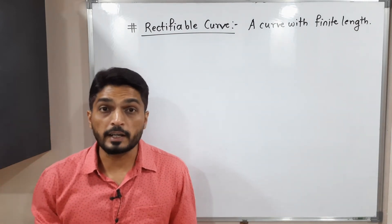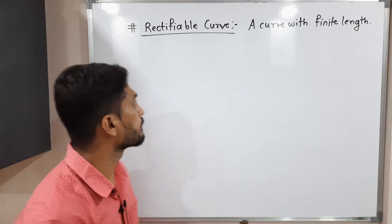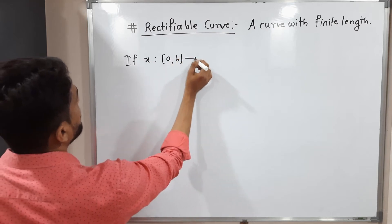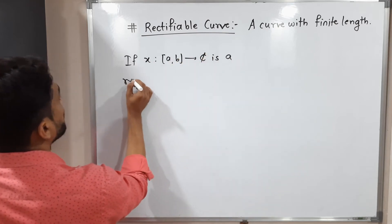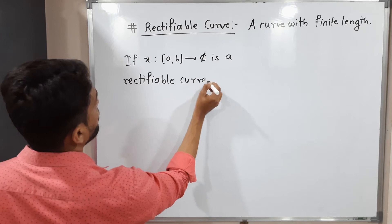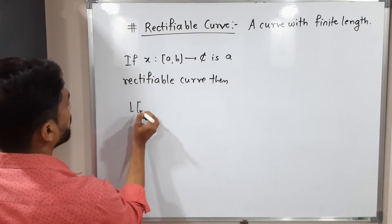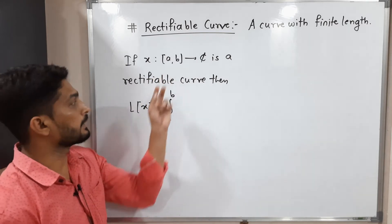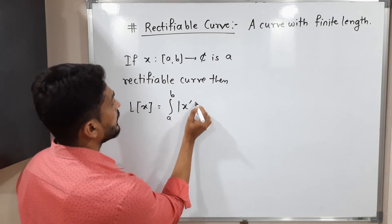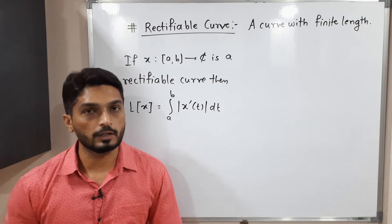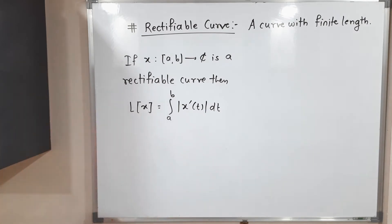Now the question is: if a given curve is rectifiable, meaning it has finite length, how do we find its length? If we have a curve x defined on the closed interval [a, b] and it is a rectifiable curve, then its length is calculated as: L(x) = ∫ from a to b of |x'(t)| dt. Using this formula we find the length of curves.